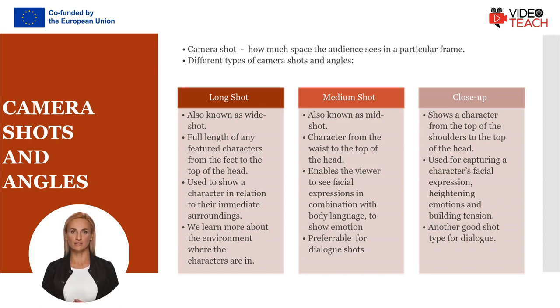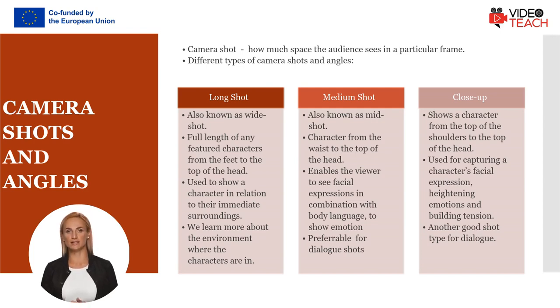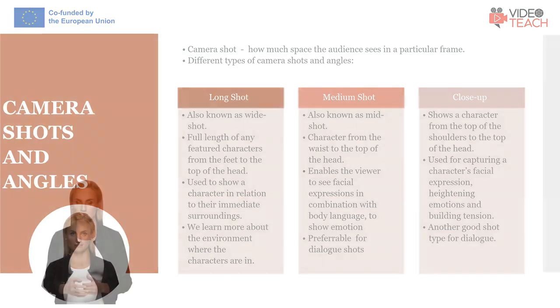Close-up generally shows a character from the top of the shoulders to the top of the head. It is used to capture a character's facial expression, heighten emotions, and build tension. Another good shot type for dialogue.